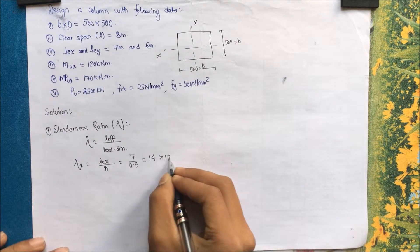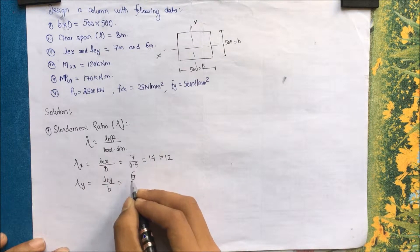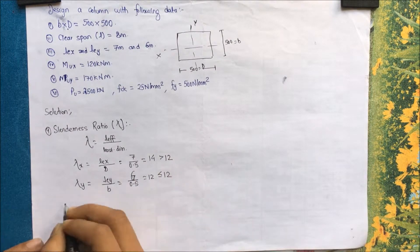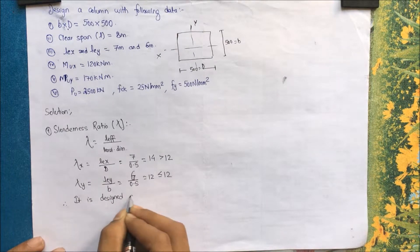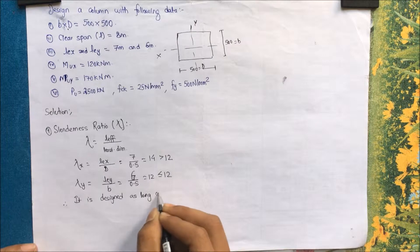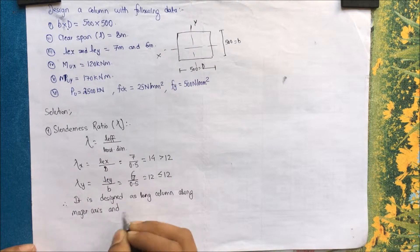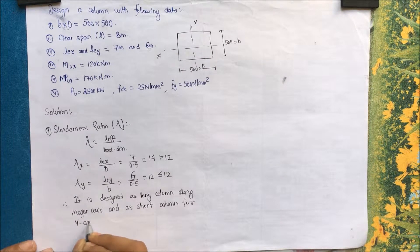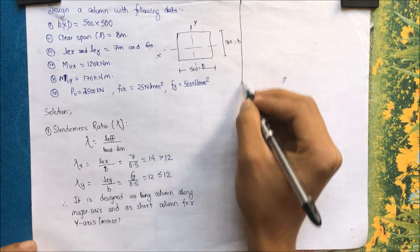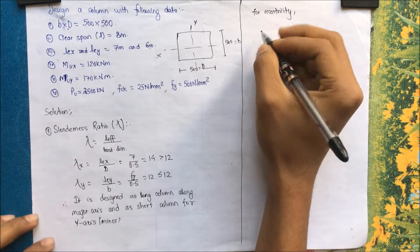For λy: ley / b = 6 / 0.5 = 12, which is less than or equal to 12. Hence the column is slender along the x-axis but not along the y-axis. Therefore it is designed as a long column along the major axis (x-axis) and a short column along the minor axis (y-axis).